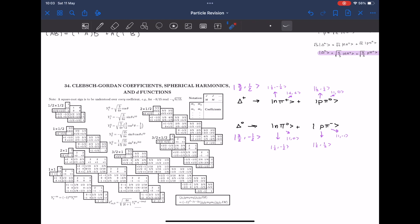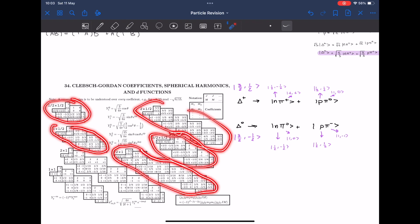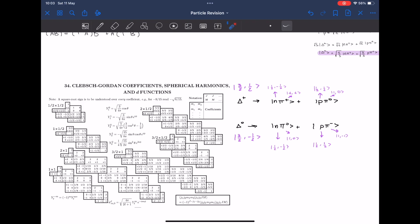So the first thing you want to do is identify which little table you want to use. You have all these different tables in the Clebsch-Gordan coefficients and they all represent different types of decays. So let's start with this one.